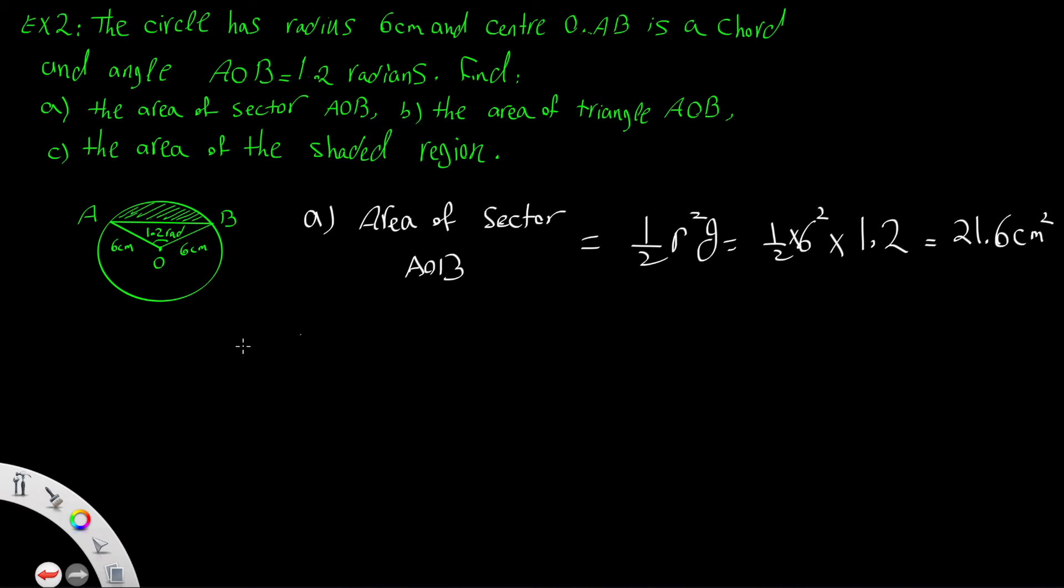Part (b): the area of triangle. You learned in trigonometry that to find the area of a triangle when you have two sides and the included angle, you use 1/2 × 6 × 6 × sin(1.2), which equals 16.8 square centimeters.